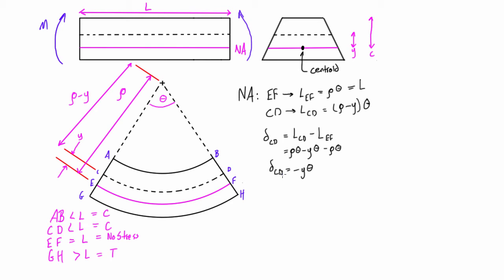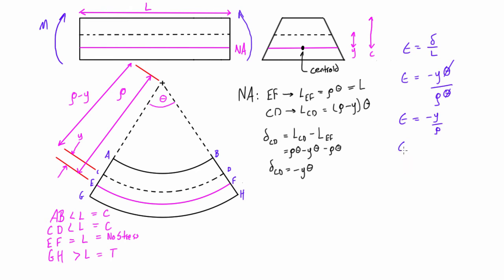Now we want to talk about strain rather than just deformation. Strain equals deformation over original length. The deformation for CD is −yθ, and the original length L is ρθ. The θ terms cancel, so strain at any point is simply equal to negative y over ρ. Obviously, the further we go from the neutral axis, the greater the strain.